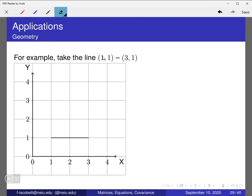So, let's look a little bit of geometry. Let's take the line that goes from (1, 1) to (3, 1). Here it is, (3, 1) right there, and (1, 1) right here. So, there's this line that goes between these two, right?